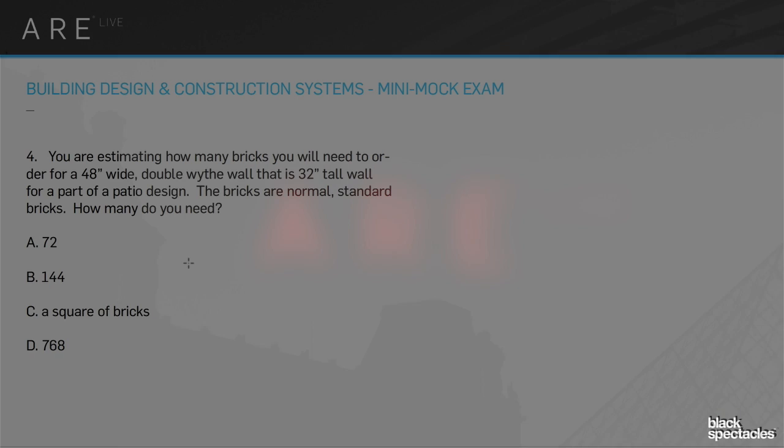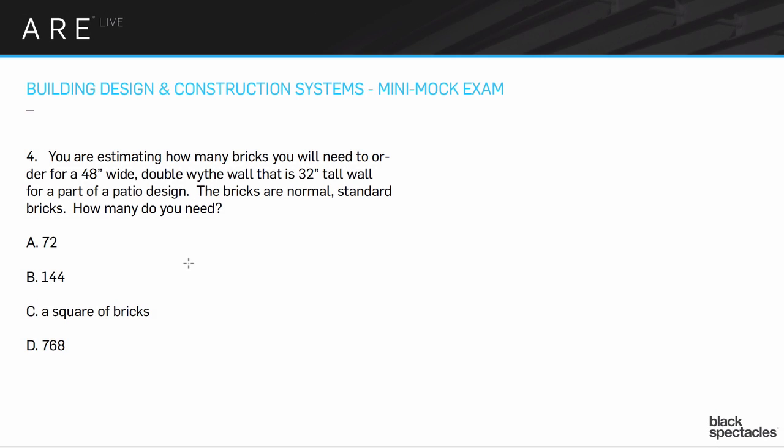Number four: you are estimating how many bricks you will need to order for a 48-inch wide double wythe wall that is 32 inches tall, for part of a patio design. The bricks are standard, normal bricks. How many bricks would you need?